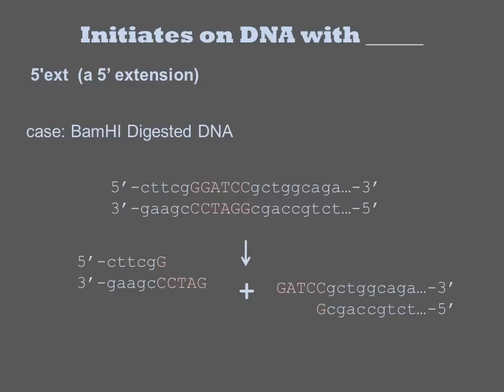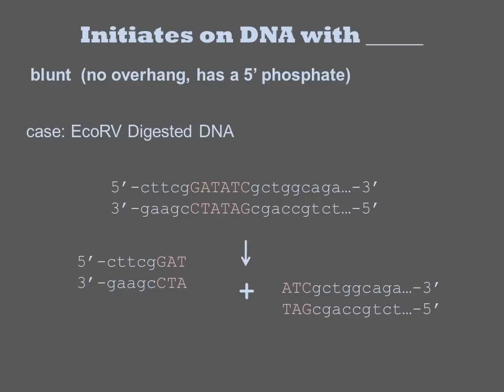When it says 'initiates on DNA with a 5' extension,' the sort of end it is referring to is the products one gets from many restriction enzymes like BAMH1. One that initiates on a 3' extension similarly can act on the ends of a DNA cut by restriction enzymes such as PSD1 and many of the two-cutters. Blunt ends can result from restriction digestion or the ends of PCR products. For example, ECOR5 leaves no sticky ends, and some exonucleases will employ this while others won't.